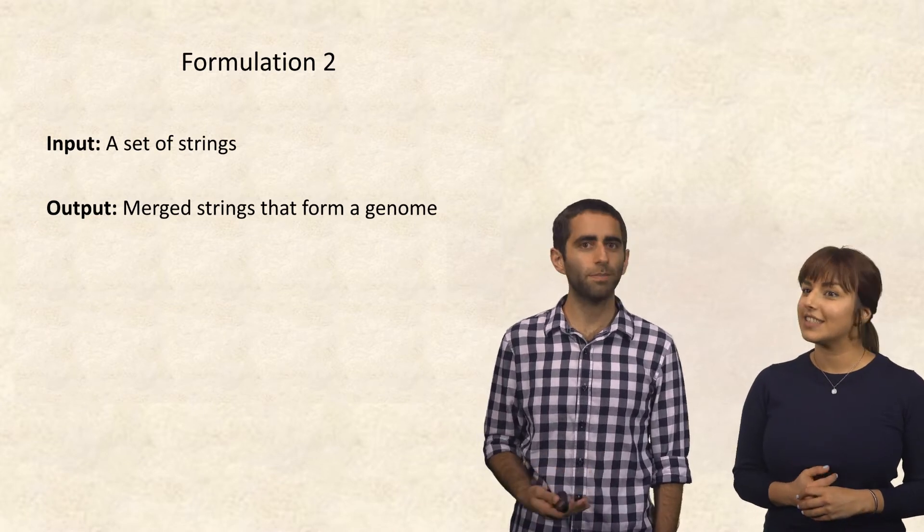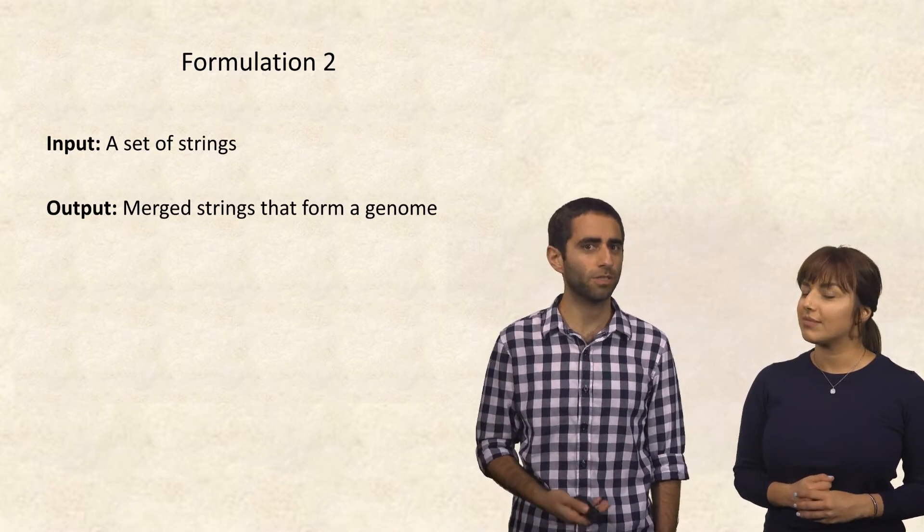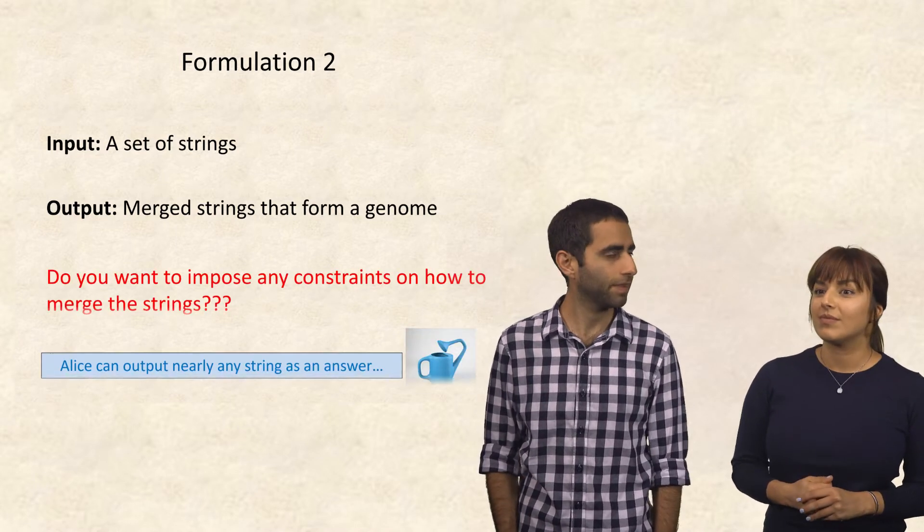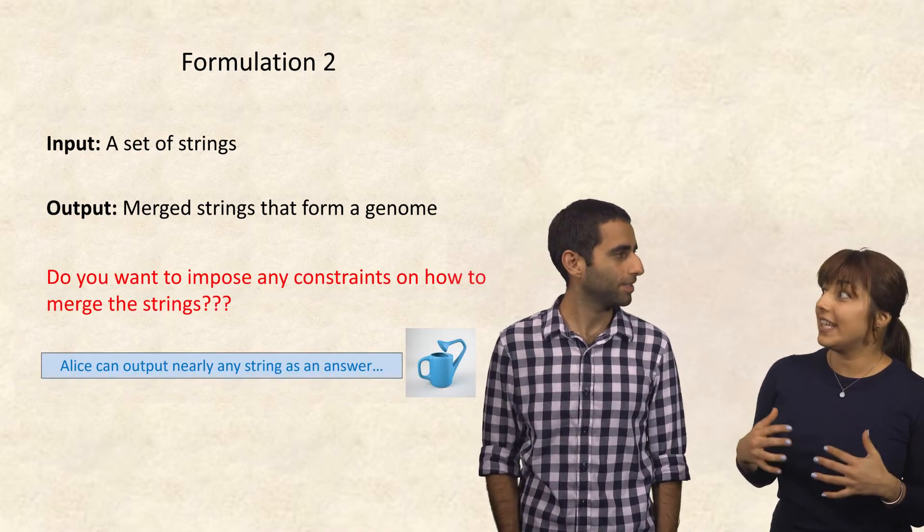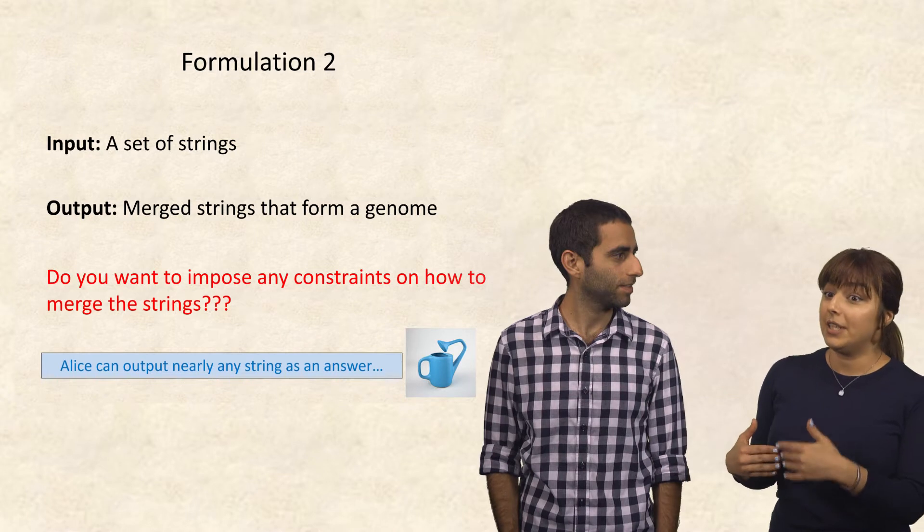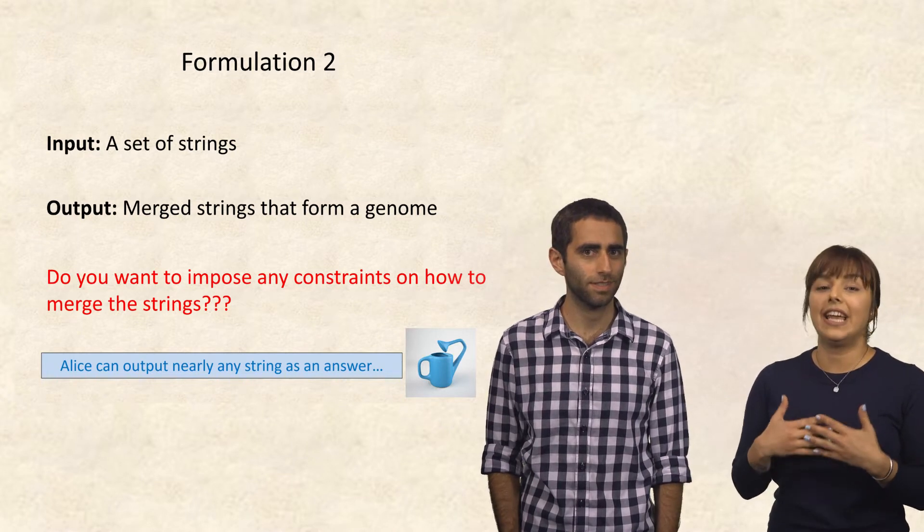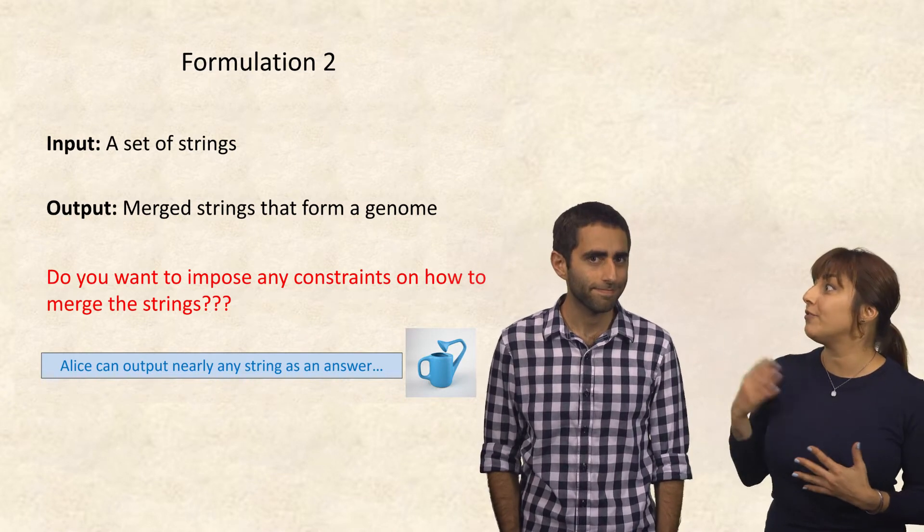So now, what if the input was a set of strings, and the output was merged strings that form a genome? Do you want to impose any constraints on the output? Because right now Alice can output nearly any string as an answer to your problem formulation.